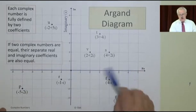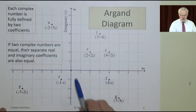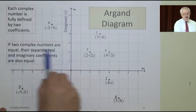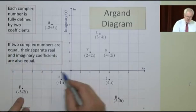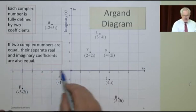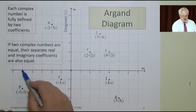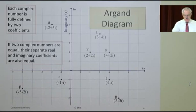And here the real values are positive but the imaginary coefficients are negative, and on this side the real values are all negative. So this point here is minus 5 minus 2i, you move 5 minus on the real and minus 2 on the imaginary.